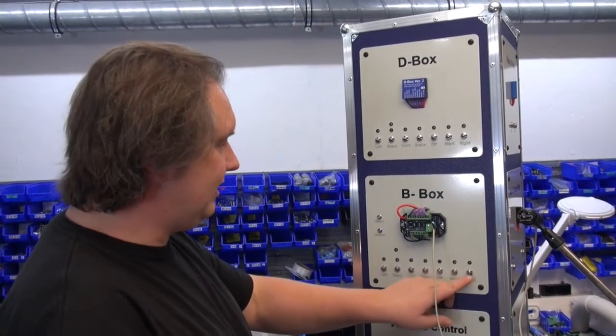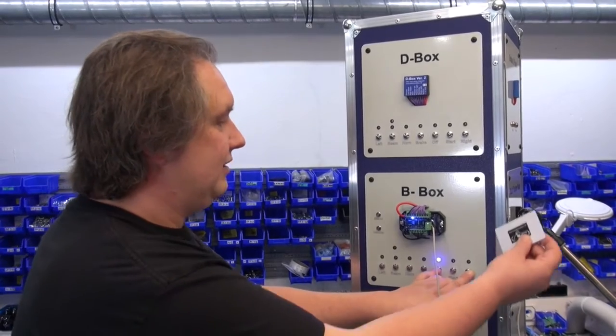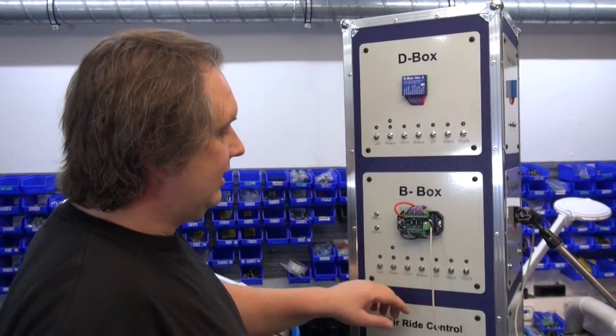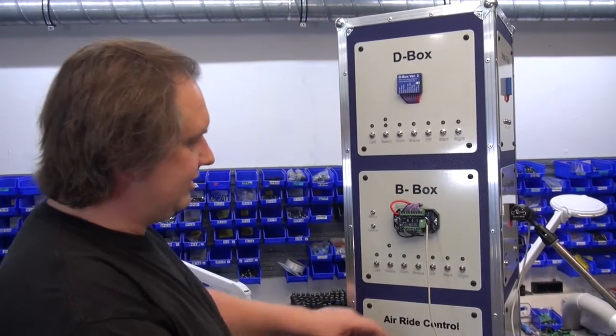And for the second tag you press the right flasher button and also the ignition button, place the tag in front and you've got the second tag learned. So now let's start the B-Box with the tags.